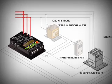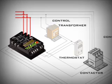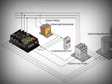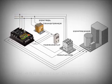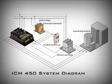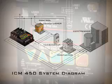The ICM 450 provides compressors with total protection from power-related problems. At power-up, it checks the incoming power for proper phase sequence, amplitude, and balance. If the power is within the user-adjustable parameters, the ICM 450 then energizes the control circuit to connect the compressor or other load.